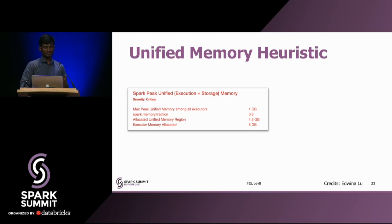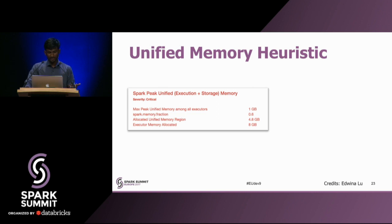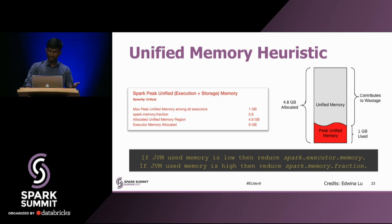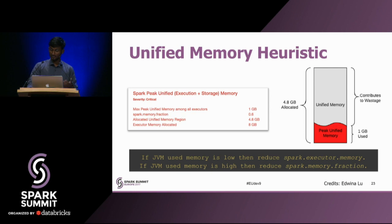Next, we have a unified memory heuristic that checks if the unified memory region is being over-allocated. Depending on the spark.executor.memory and spark.memory.fraction, a certain memory is allocated to the unified memory region. In this example, there's an allocated unified memory region of 4.8 GB, but the max peak unified memory across all executors is just 1 GB. So we recommend users to reduce the spark.memory.fraction to allocate more memory into user memory rather than unified memory, or to reduce the executor memory itself.